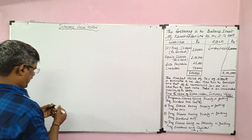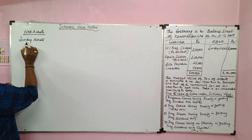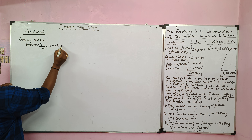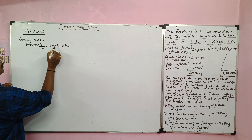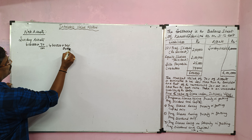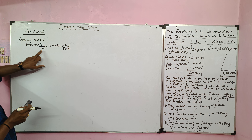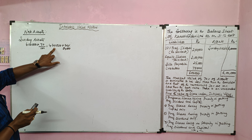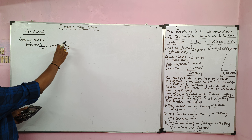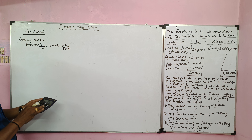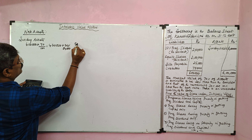Take the sundry assets. Total book value of sundry assets is 6 lakh. Take 70% of that, which is 4 lakh 20,000, increased by 20%. So 20% of 4 lakh 20,000 is 84,000. Therefore, 4 lakh 20,000 plus 84,000 gives 5 lakh 4,000 as the realizable value of the 70% portion.